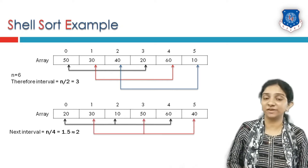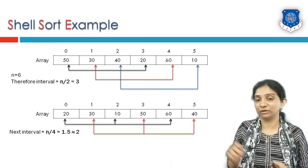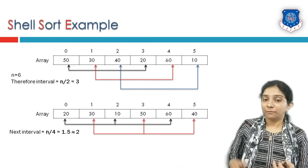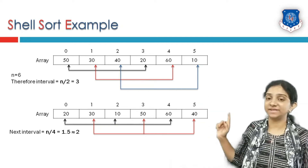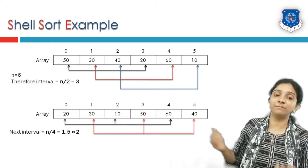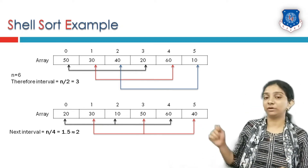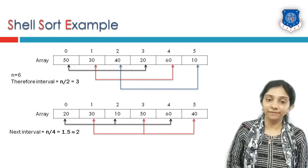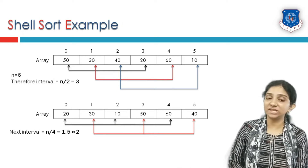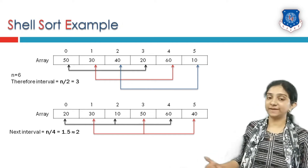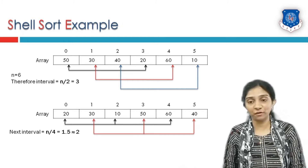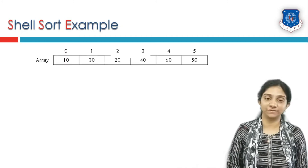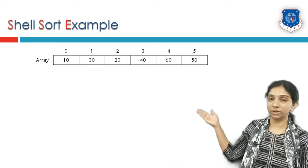The second sub-list comprises elements at index 1, 3, and 5, because they are all 2 elements apart. So we now have only 2 sub-lists. Note that the number of sub-lists is decreasing and the number of elements in each sub-list is increasing. The first sub-list contains 20, 10, and 60, which after insertion sort becomes 10, 20, and 60. The second sub-list contains 30, 50, and 40, which after insertion sort becomes 30, 40, and 50. So we get an updated array accordingly.